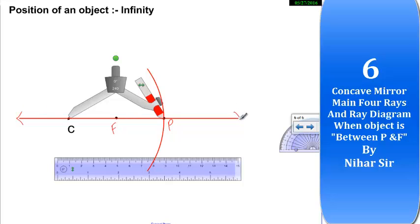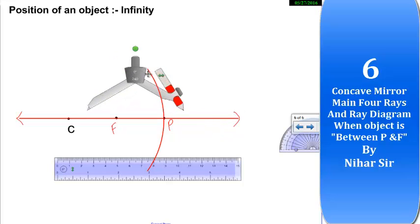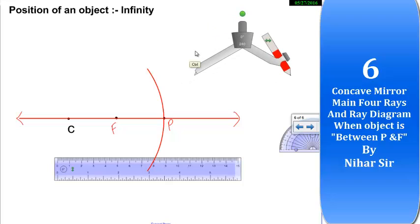Now I don't need to put object in this because object is at infinity. So I can just pass the rays. So suppose rays are coming from infinity and it will pass from the F. Another ray coming from infinity will pass from F and now here my image is formed.